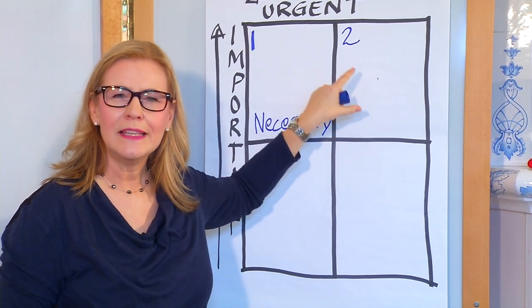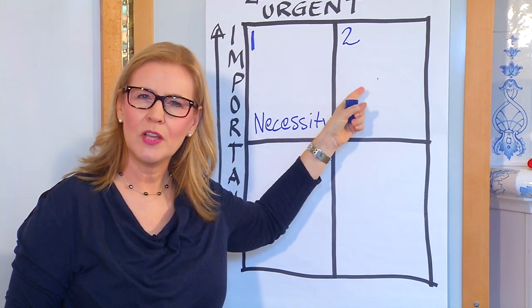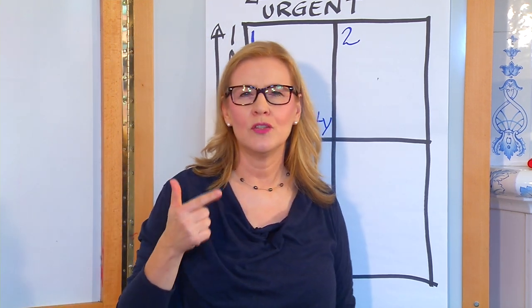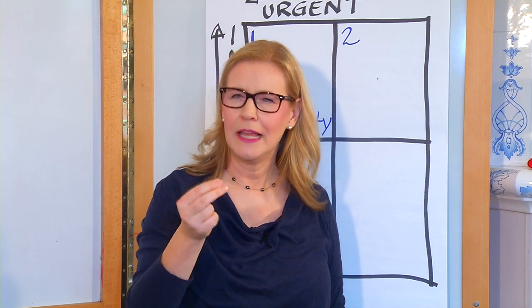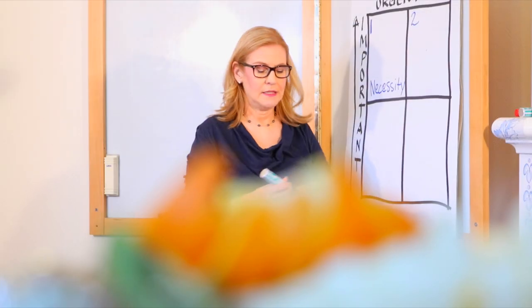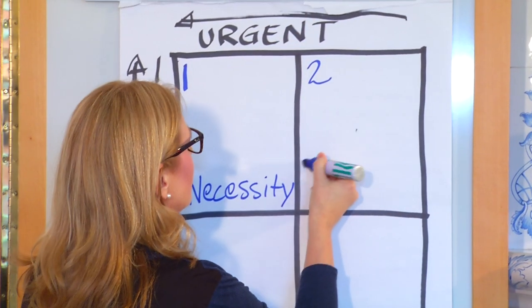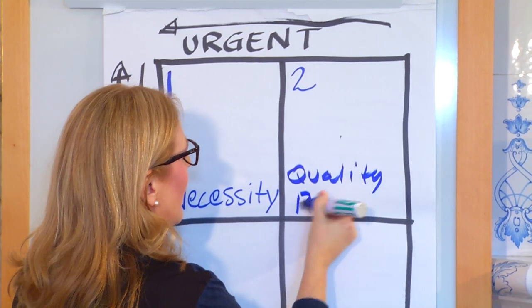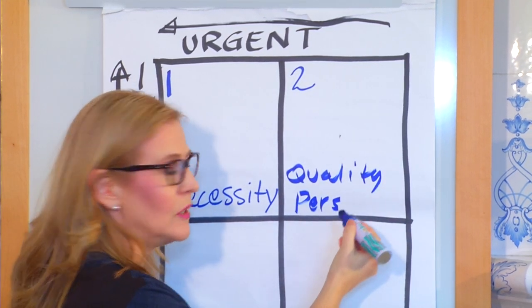Quadrant two, this is very important but it's not as urgent. So what can that be? That's your planning, that's your recreation, this is relationship building, this is your opportunities. This is for quality and personal leadership.